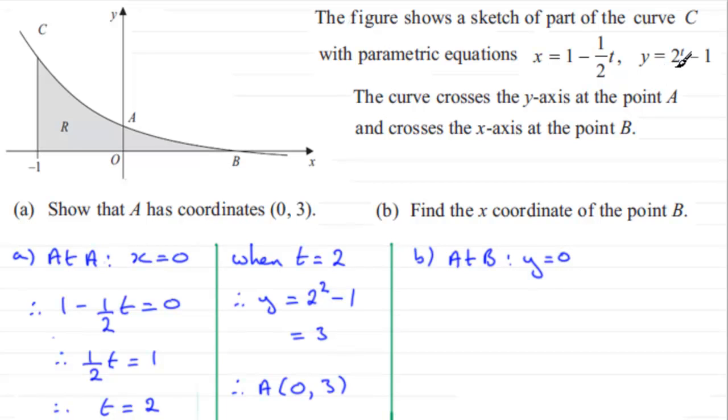So therefore we've got 2 to the power t minus 1 equals 0. And if we add 1 to both sides we therefore have 2 to the power t equals 1. And this is an obvious answer because anything to the power 0 gives us 1 so therefore t must be equal to 0.